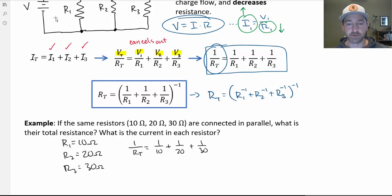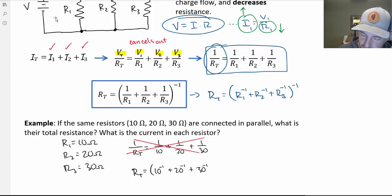People always screw up on that. They end up trying to add the denominators together and saying it's 1 over 60. You got to add a common denominator before you can add. It gets cumbersome. So instead of doing that, which I find annoying, we're going to write that RT equals 10 to the negative 1 plus 20 to the negative 1 plus 30 to the negative 1, and then all that to the negative 1 power.